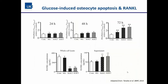Other investigators have looked at the effects of high glucose and also advanced glycation end-products (AGEs) on osteocyte apoptosis and RANK ligand expression. They found that only upon longer-term culture in high glucose medium was there a significant effect on apoptosis; AGE exposure also significantly increased apoptosis. Regarding RANK ligand expression, in whole cell lysate it was actually reduced upon AGE exposure, but in the supernatant they found a higher release of RANK ligand by osteocytes upon AGE exposure.